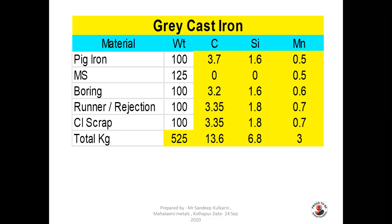We have added the charge mix in kilograms: pig iron 100 kg, MS 125 kg, CI boring 100 kg, runner riser 100 kg, CI scrap 100 kg — total charge 525 kg. With 3.7% carbon in pig iron, 3.2% carbon in boring (100 kg), 3.3% carbon in runner riser (100 kg), and 3.35% carbon in CI scrap (100 kg), the total carbon inside the 525 kg charge mix is 13.6 kg.